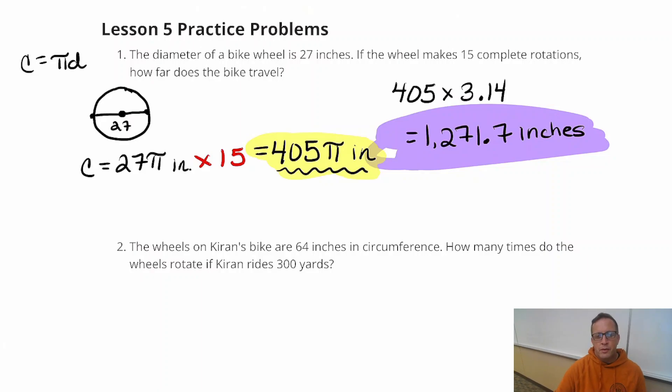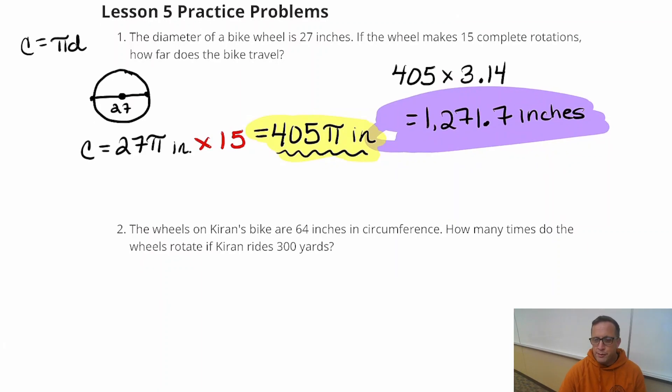So depending on what you're doing, even if you used your pi button, perhaps, if you used the pi function on your calculator, you might have got something a little bit different, but it's probably going to be pretty close to that 1,271 figure. So whatever way you do it, it's great.